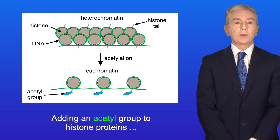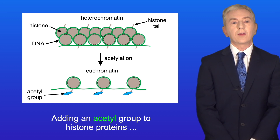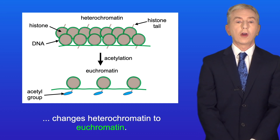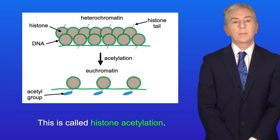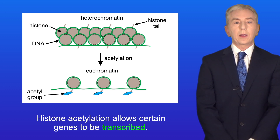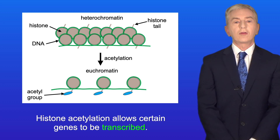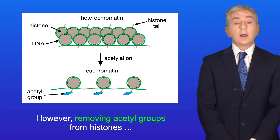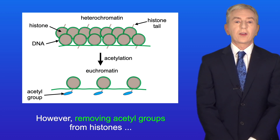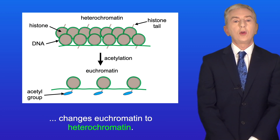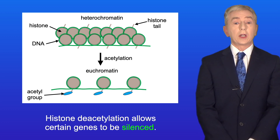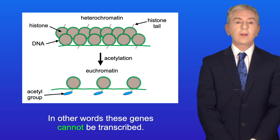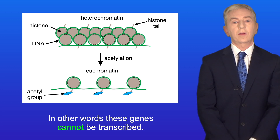Adding an acetyl group to histone proteins changes heterochromatin to euchromatin. This is called histone acetylation, and histone acetylation allows certain genes to be transcribed. However, removing acetyl groups from histones changes euchromatin to heterochromatin. Histone deacetylation allows certain genes to be silenced — in other words, these genes cannot be transcribed.